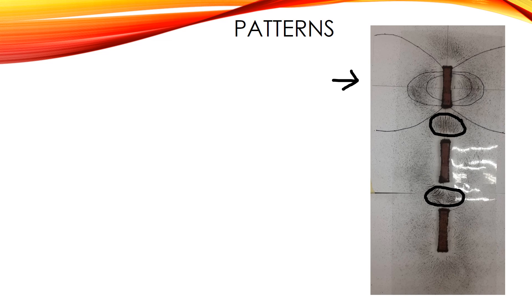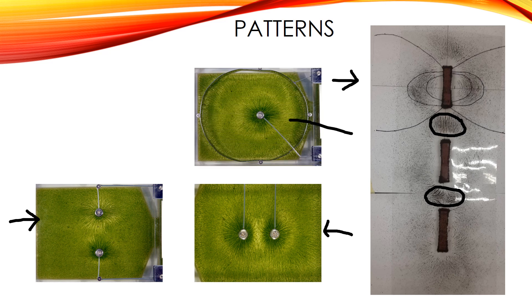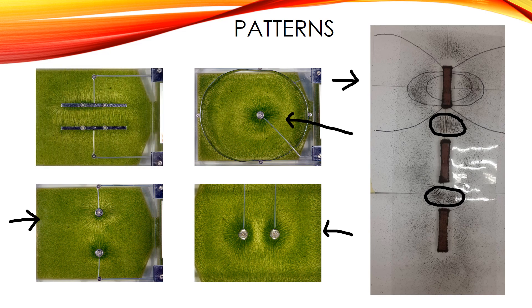For electric fields, the patterns are similar. You can deduce which configuration is repulsive and which is attractive. Here are pictures: number one and number two show two charges, and another picture shows a single charge and its pattern. Lastly, there is what we call parallel plates — you'll learn about that soon, but not today.